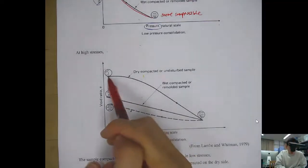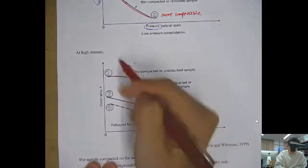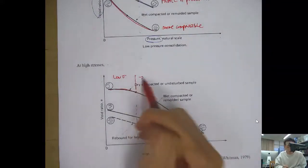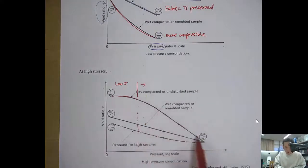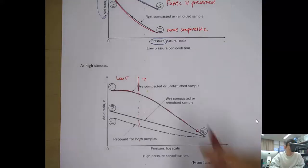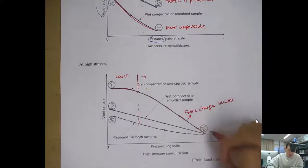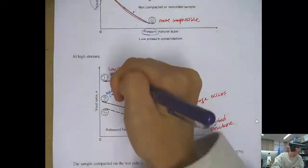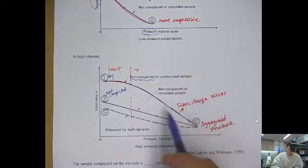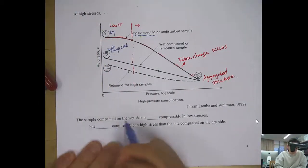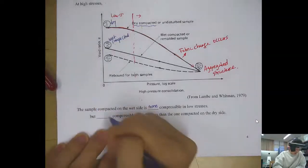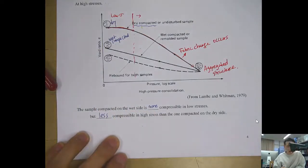In the low stress region, dry-compacted soil is less compressible, but when stress exceeds a certain point it dramatically compresses as the fabric changes and becomes more parallel-oriented. In summary: the sample compacted on the wet side is more compressible in low stress regimes, but becomes less compressible in high stress regimes than the one compacted on the dry side.